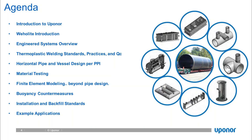Today's agenda will give you an introduction to Uponor, cover Weholite material profile—how it's manufactured and what applications it can be used in. We'll talk about thermoplastic welding standards, practices, and quality control methods. We'll discuss horizontal pipe and vessel design per the Plastic Pipe Institute, briefly cover material testing, finite element modeling, buoyancy countermeasures, installation and backfill standards in accordance with ASTM D2321, and then cover some example applications with whatever time is left.